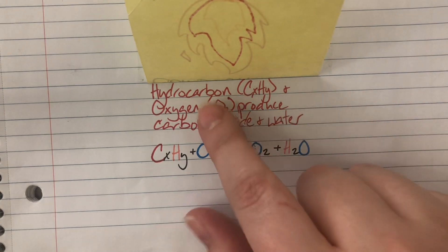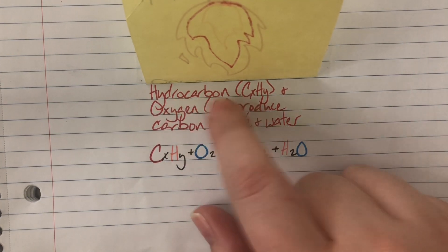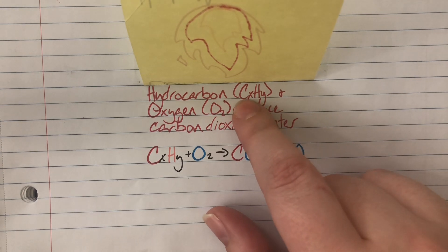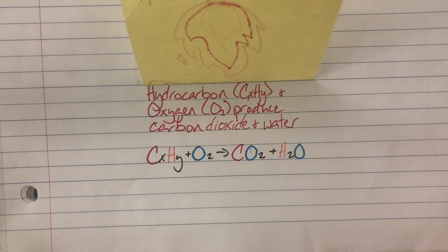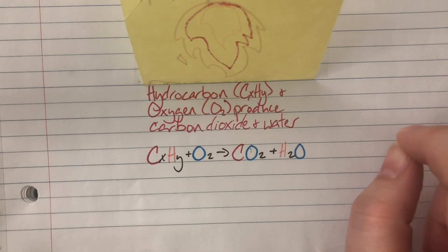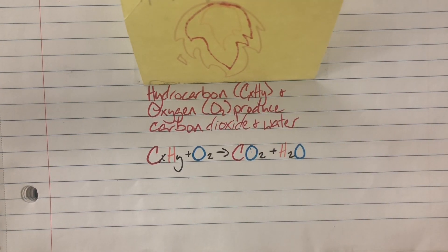I must have a hydrocarbon. Hydrocarbons are simply a compound that contain hydrogen and carbon and the rest of it is set in stone. The hydrocarbon can change but the rest of them cannot. So my hydrocarbon must react with oxygen. And it must produce carbon dioxide and water every single time.